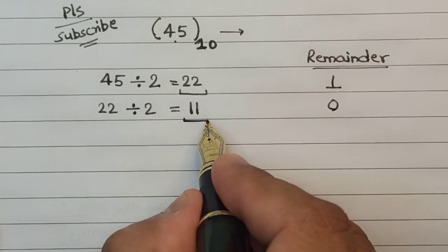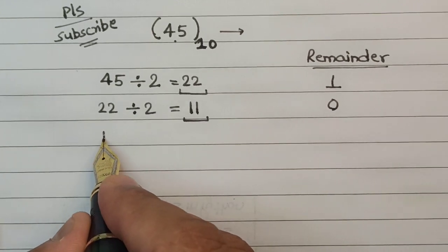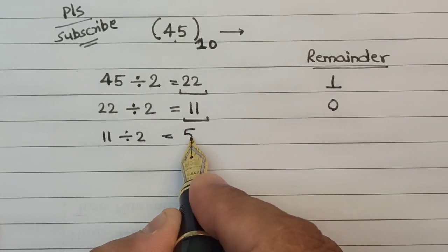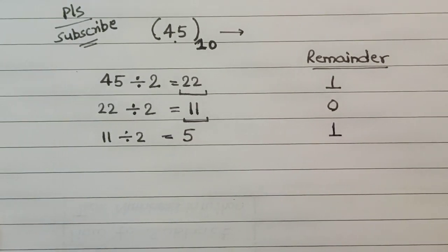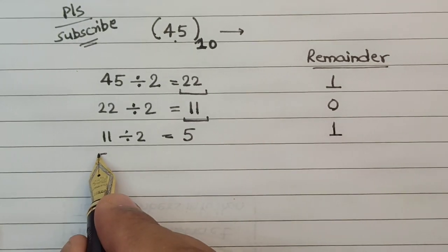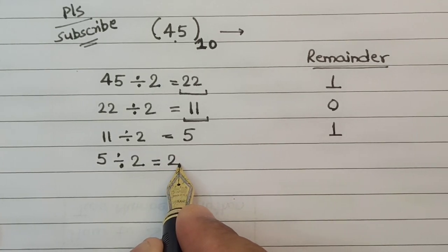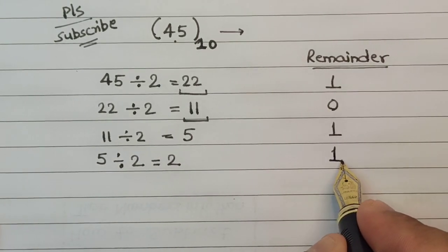In the next step we divide 11 by 2 and we get the quotient as 5 with the remainder as 1. In the next step we divide 5 by 2, we get the quotient as 2 and the remainder as 1.